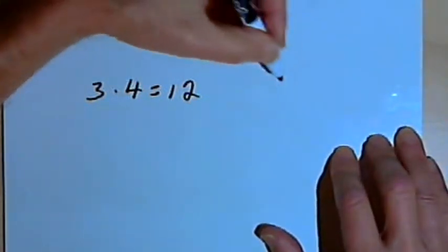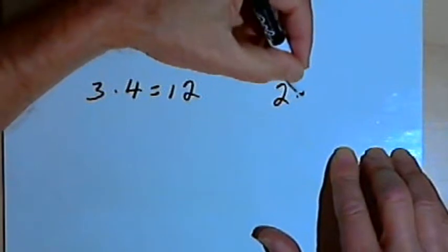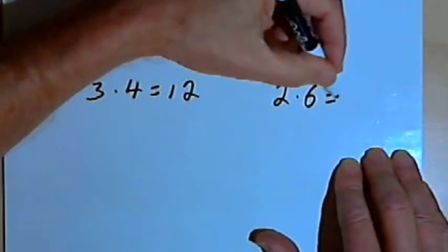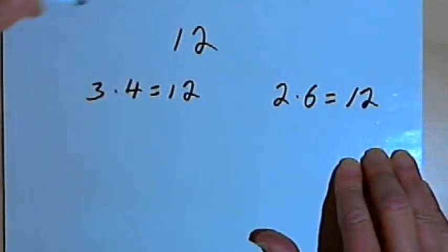Now if I wanted to, I could have also said that 12 is a result of multiplying 2 times 6. 2 times 6 also equals 12.